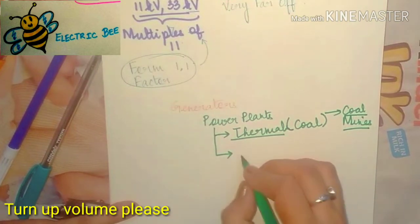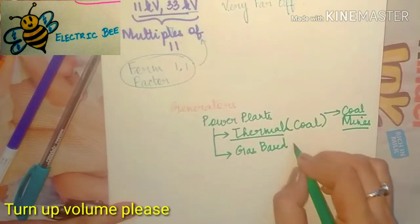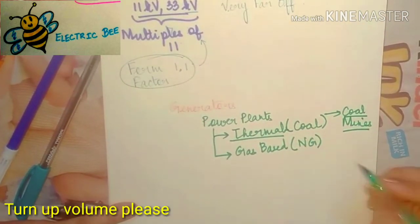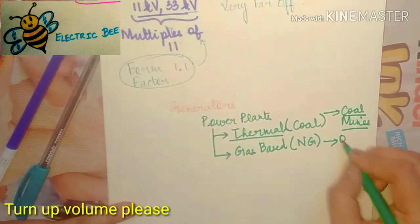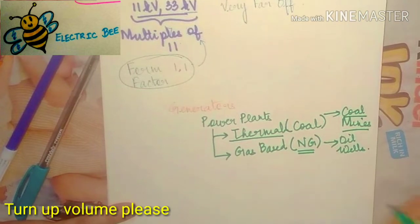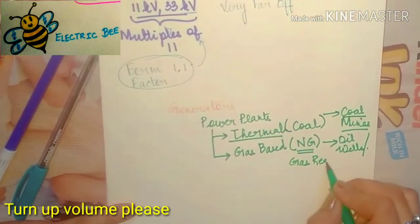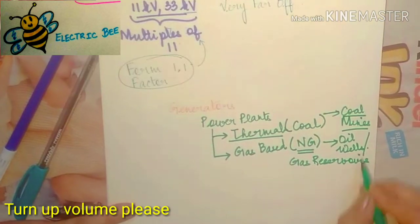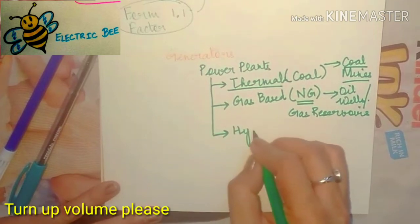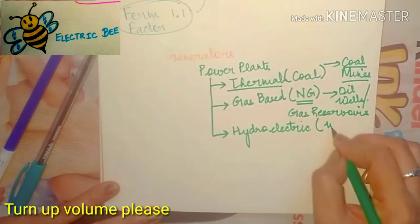Gas-based power plants use natural gas as a source of fuel, so they are situated near oil wells or gas reservoirs where natural gas is present. The third kind is hydroelectric power plants, which use water as a source of fuel.